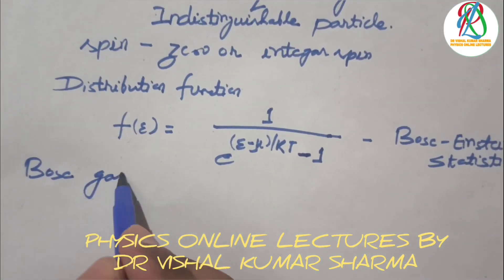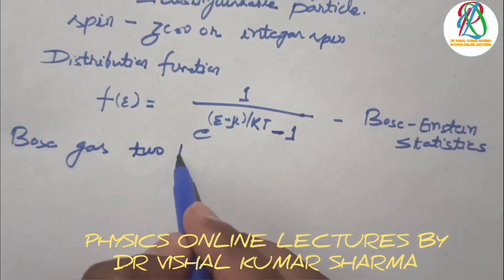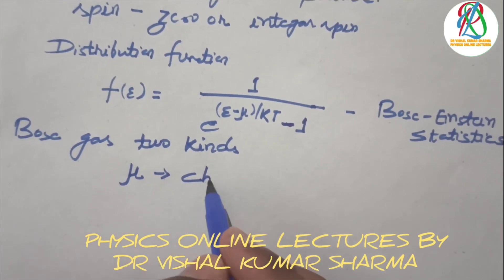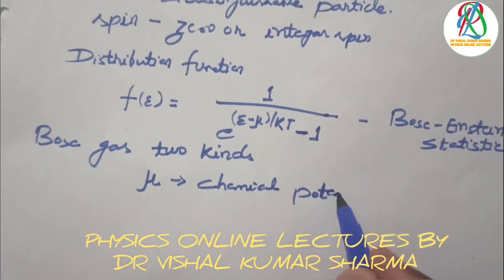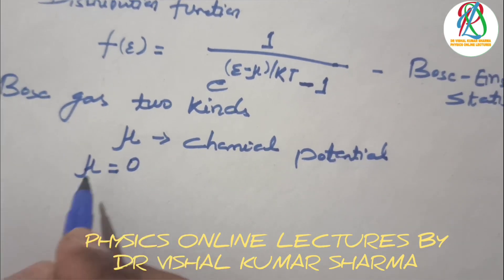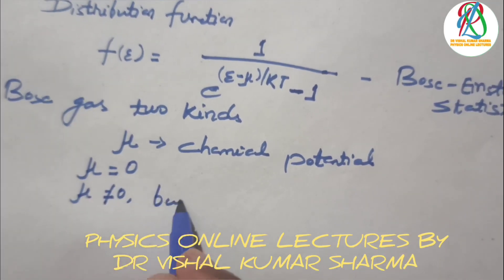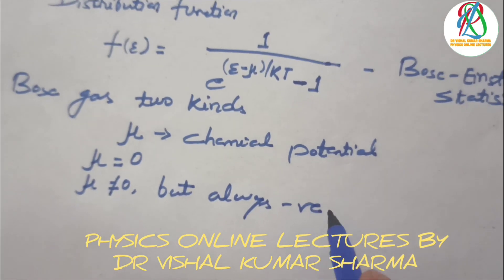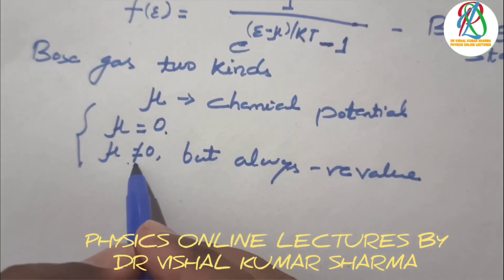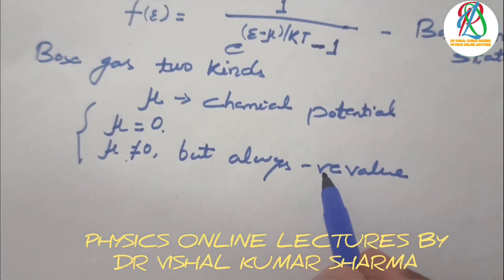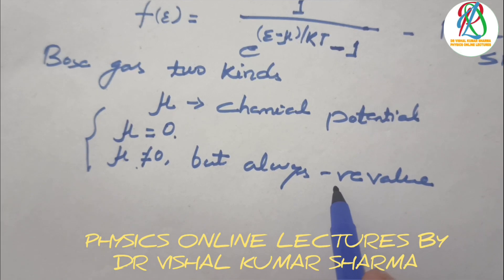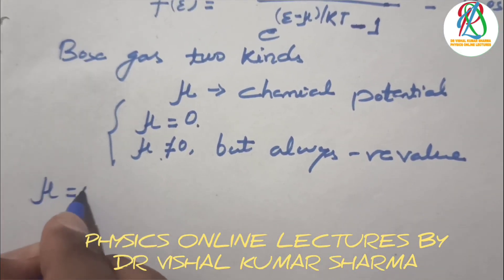Bose gases can be of two kinds depending on the chemical potential μ. For bosons, μ is always zero or negative. The first kind has μ equal to zero, and the second kind has μ not equal to zero but always a negative value.